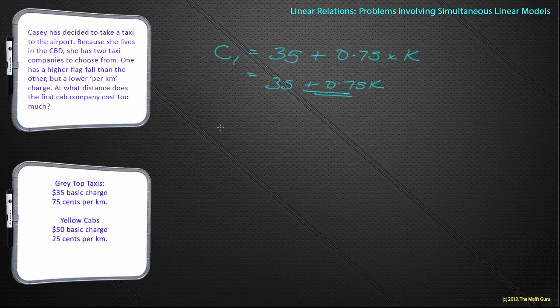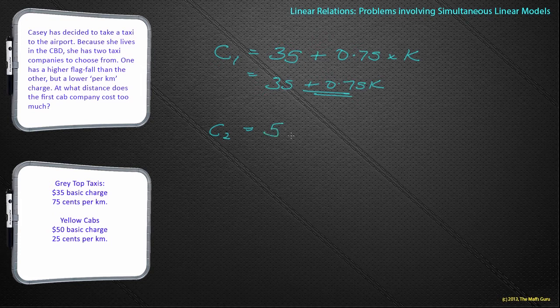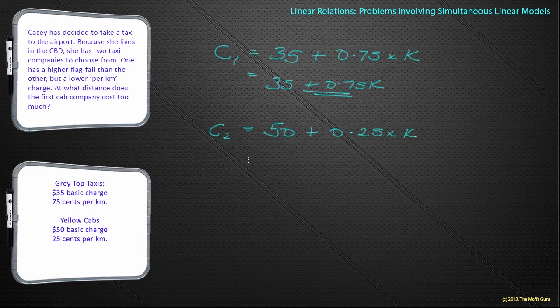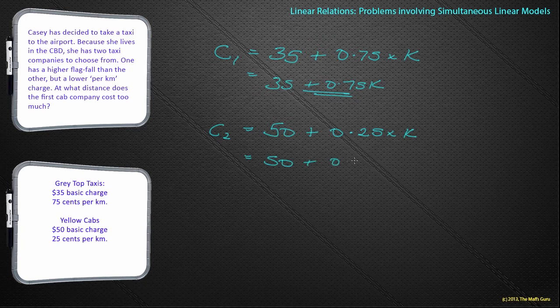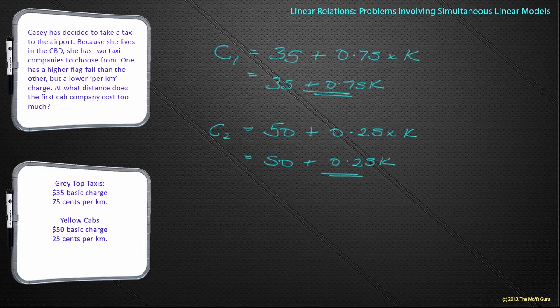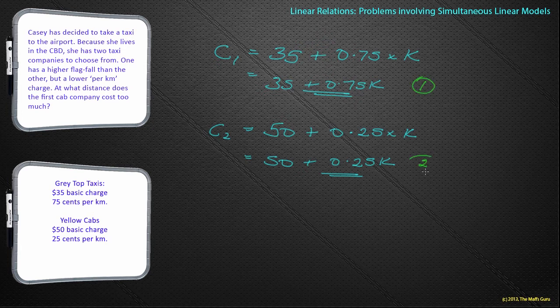So I end up with 35 plus 0.75k as my cost function for that first cab. Where about my second? Well, my second cab is going to be pretty much similar. So we have a $50 basic charge, but this time only 25 cents per kilometre. So my cost function becomes 50 plus 0.25k. Now, these are effectively simultaneous equations. They deal with the same idea. This is equation number one, and this is equation number two.